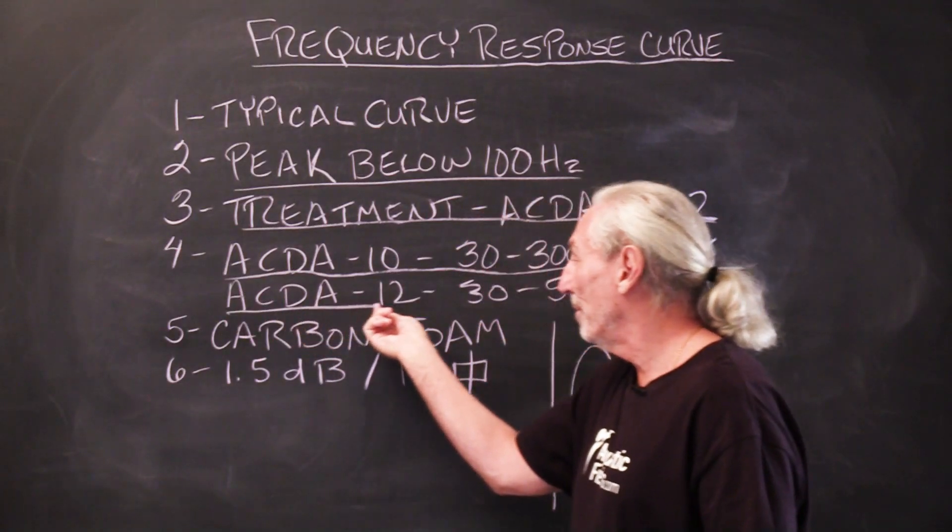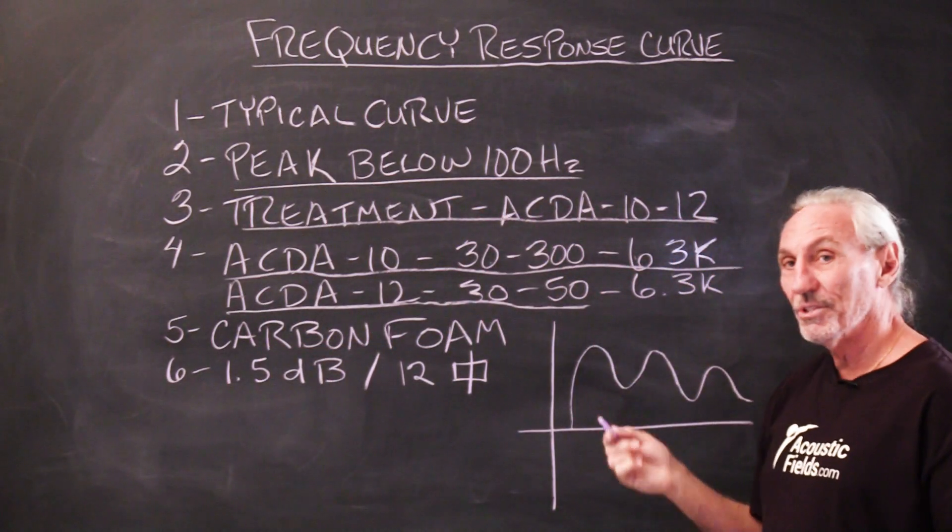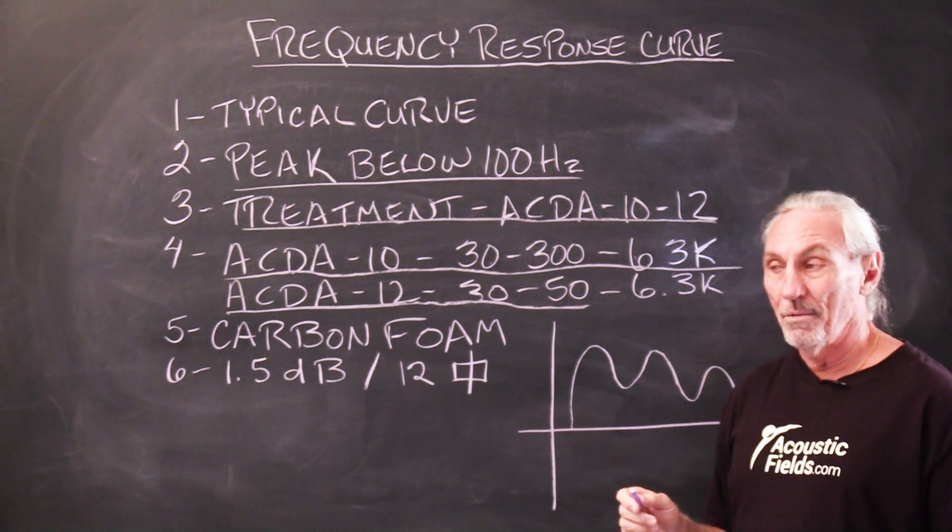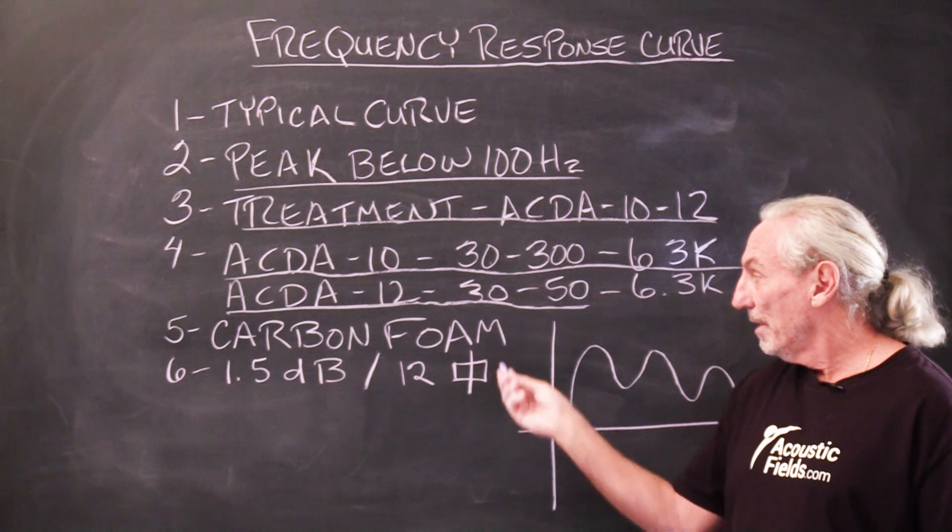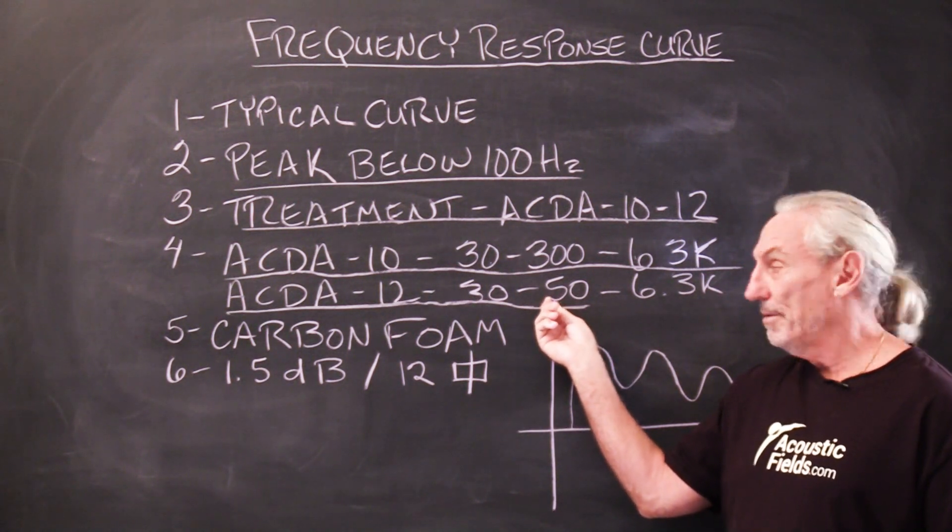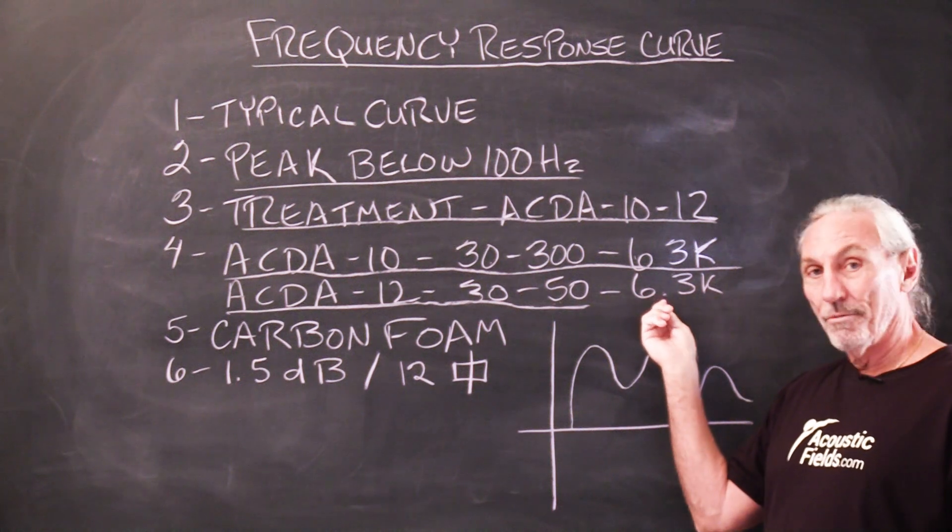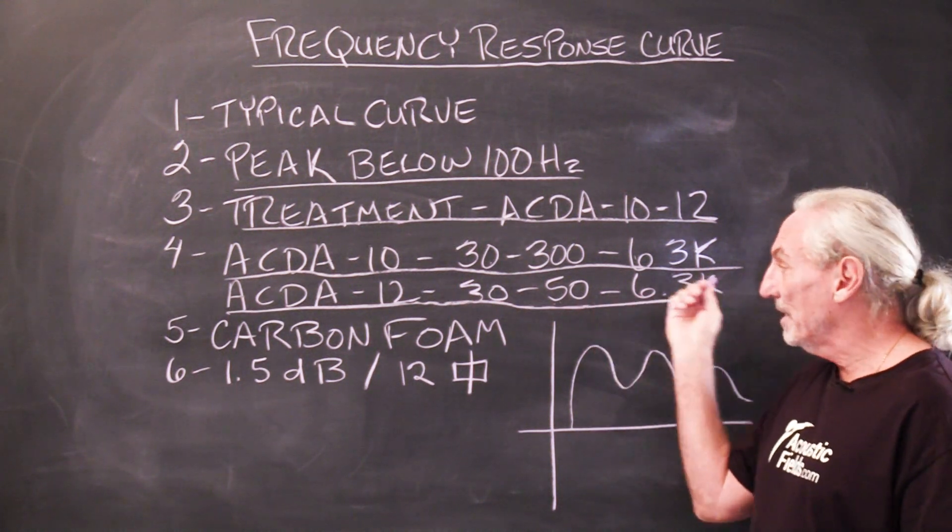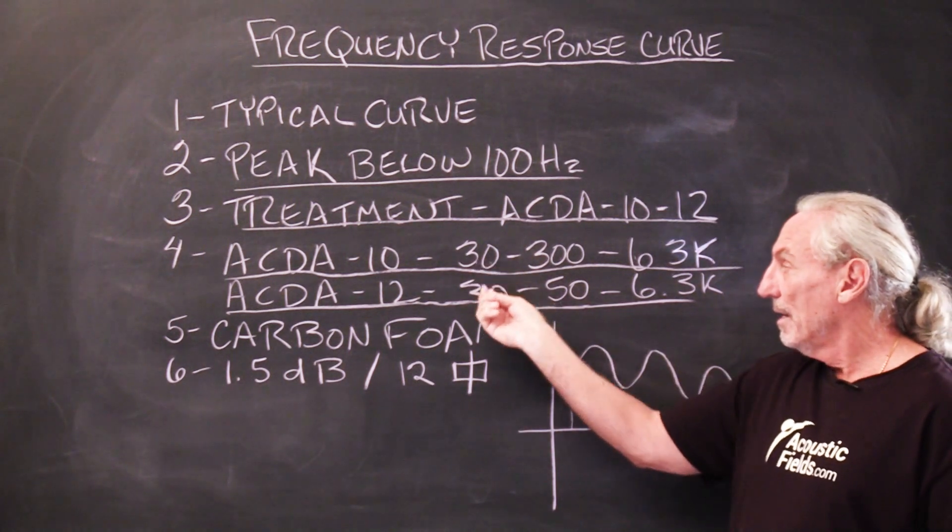The ACDA-12 is our most powerful product. There's nothing in the marketplace—and I repeat, nothing, no matter what manufacturers tell you—that gets the absorption coefficients that we get from 30 to 50. And then we put our foam on the face which drives it up to 6,300. So you get a nice broadband absorption in both from 30 to 6,300.